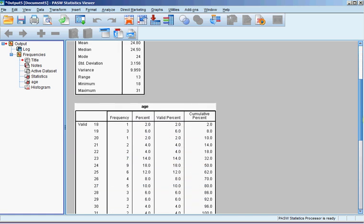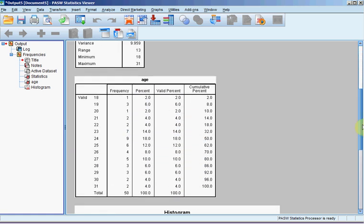Let's now come down and take a look at this on the Frequency table. Here we see that 18 occurred once, which constitutes 2%. We see that 19 occurred 3 times, which constitutes 6%, and on down the line.